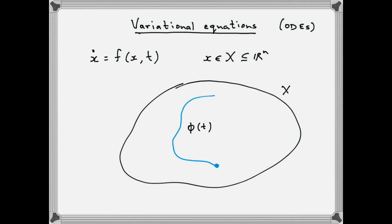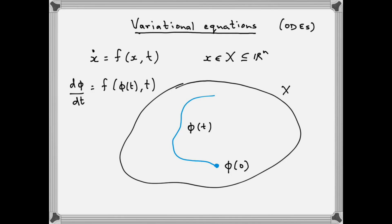This initial condition is phi naught, and the fact that phi satisfies the differential equation means that d phi by dt is equal to f of phi(t), t. What we're going to be discussing is the variational equation about this solution phi — the variational equation for this differential equation around this particular solution phi. We'll discuss what that means and try to get some geometric insight into it.